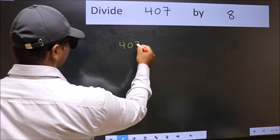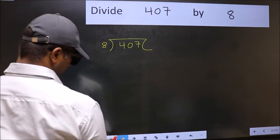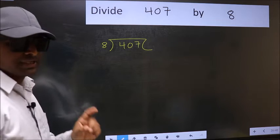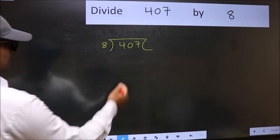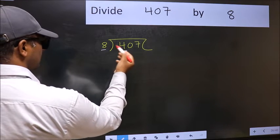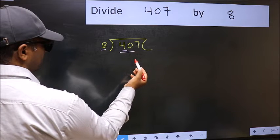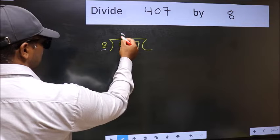407 and 8 here. This is your step 1. Next, here we have 4 and here 8. 4 is smaller than 8, so we should take 2 numbers, 40. When do we get 40 in 8 table? 8 times 5 is 40.